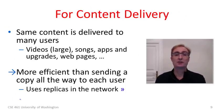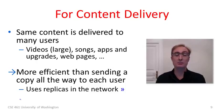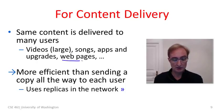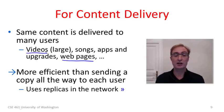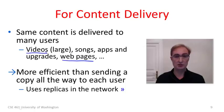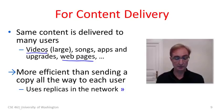Another reason we build networks is to provide efficient content delivery. This became important as the web exploded, where the same content is delivered to many different users. The content might be web pages, but these days it could also be videos — which are very large — as well as songs, different applications, and operating system and program upgrades. We can build content delivery designs that are more efficient than sending a separate copy from a source to each individual user, by using replicas in the network.